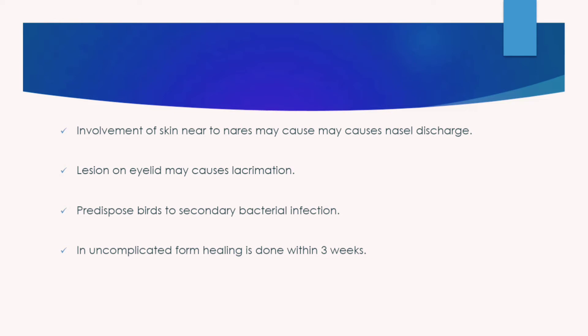Involvement of the skin near the nasal area may cause nasal discharge. Lesions on the eyelids may cause lacrimation. These conditions predispose birds to secondary bacterial infection, because the immunity of the birds is decreased and bacterial infection occurs more easily.